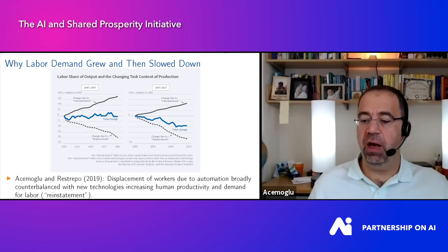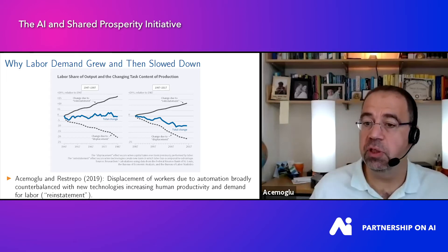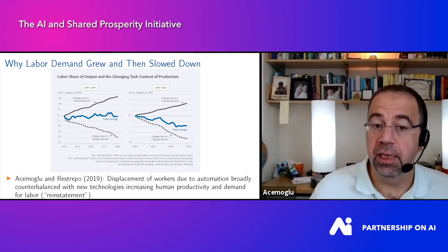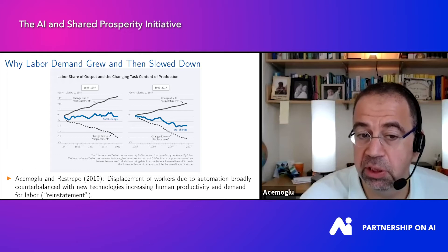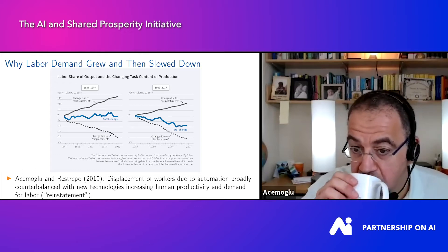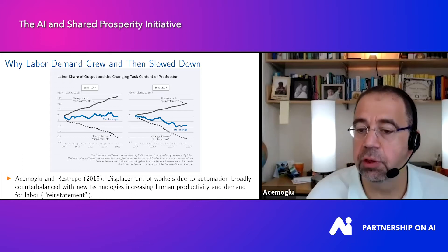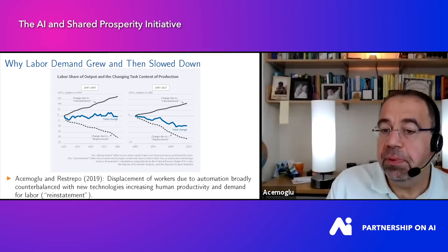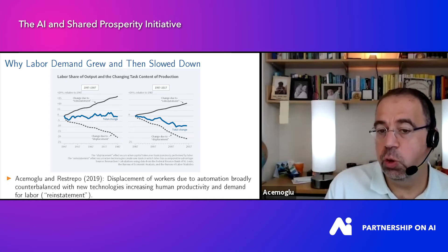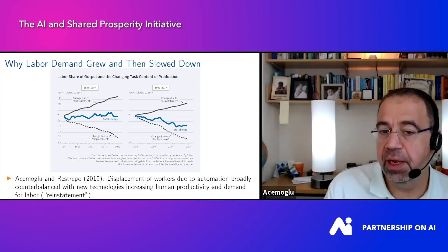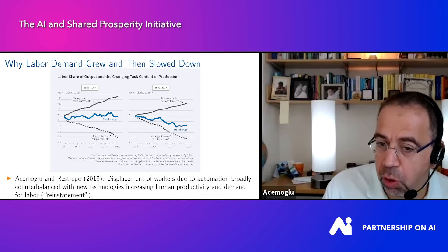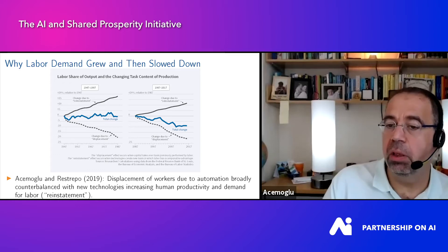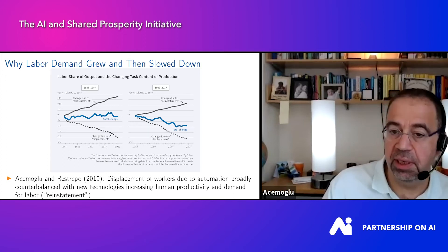In the four decades following World War II, there is a remarkable pattern: when you look at the sum of displacement due to automation and reinstatement due to other technological changes, the sum is approximately zero, as shown by the thick blue line in the middle. On the right, the pattern is very different — the dashed line is going negative faster and the black line is increasing much more slowly, so that the sum, the thick blue line, is heading south and explains the bulk of the slowdown in private sector labor demand.